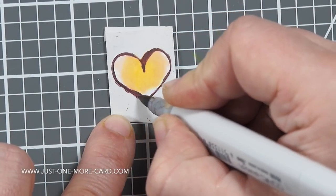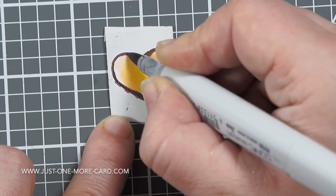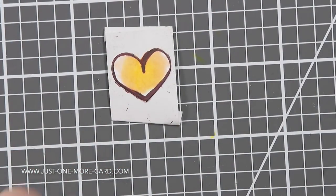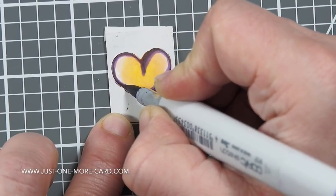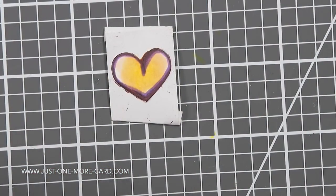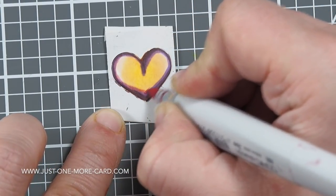So I'm using my Copic markers here to do that. I have put that heart on a piece of post-it tape just so it won't move around, it will be easier for me to color. And now I am using several Copic colors, which I list on my blog, to color in this heart and my goal is to show a lot of dimension.